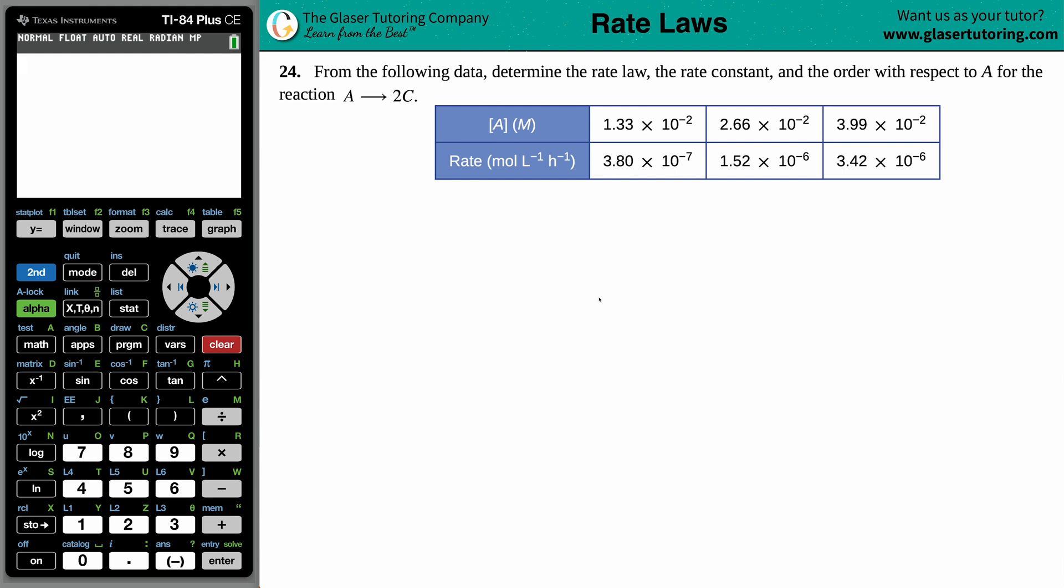Number 24. From the following data, determine the rate law, the rate constant, and the order with respect to A for the reaction A yields to C.